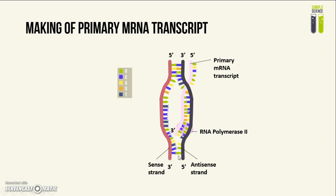Since the mRNA sequence can only be synthesized from the 5' to the 3' end, by specifying the directionality of the enzyme, the promoter essentially decides which strand of DNA the enzyme will work on.